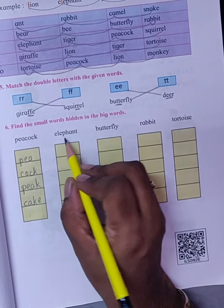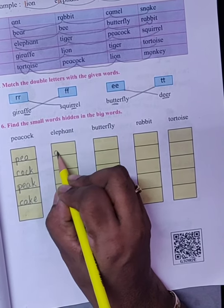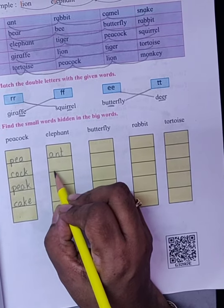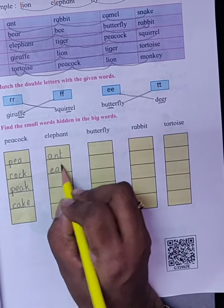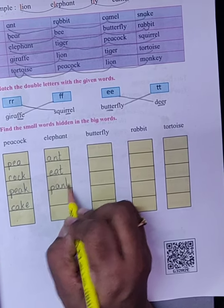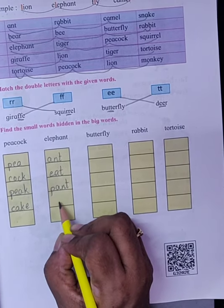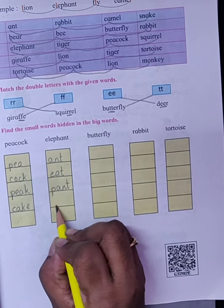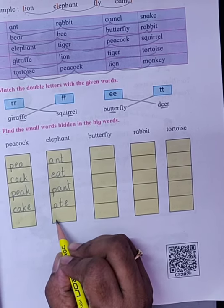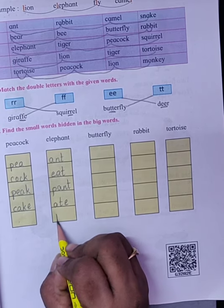We will do Elephant. Elephant we will write over here. Ant. And then here we will eat, pant. Then we will write over here ate and hat.